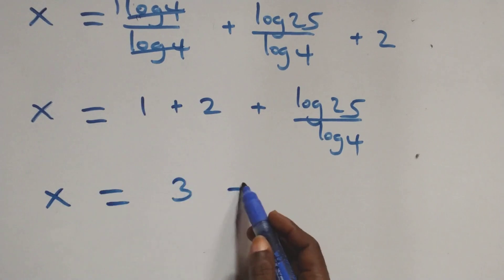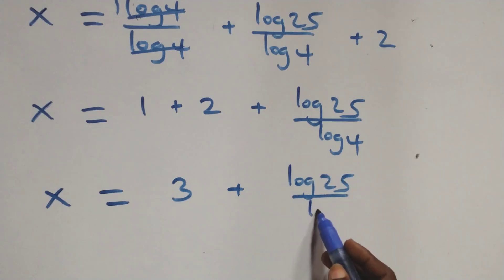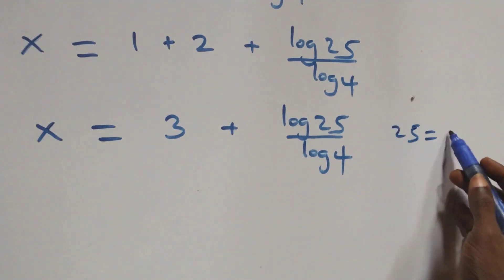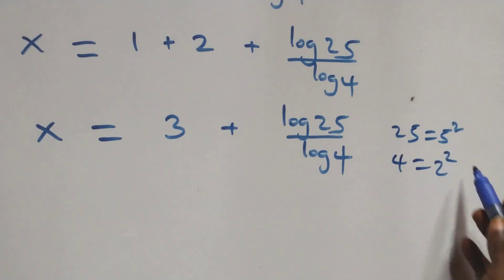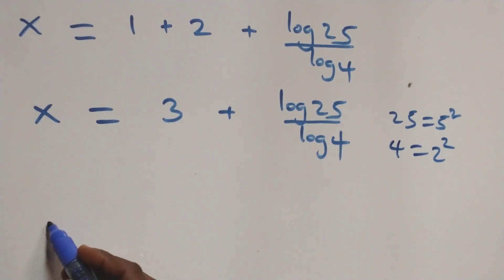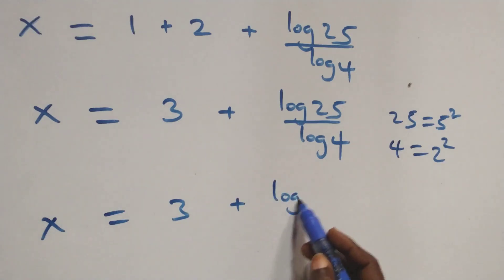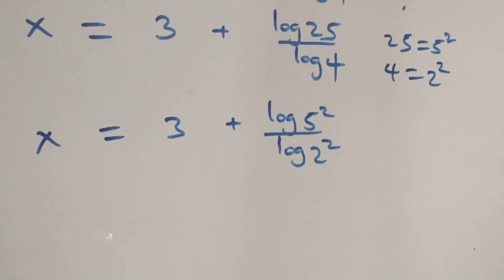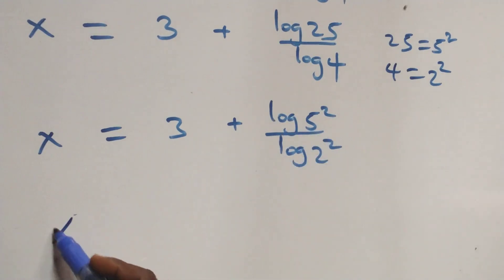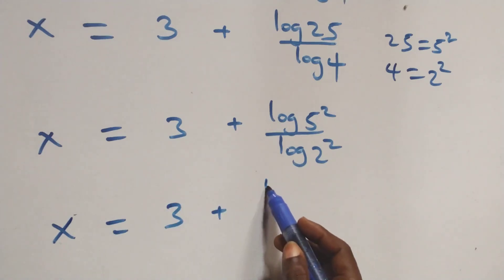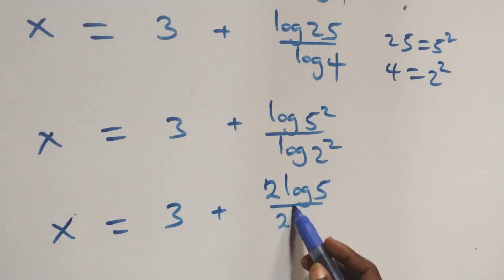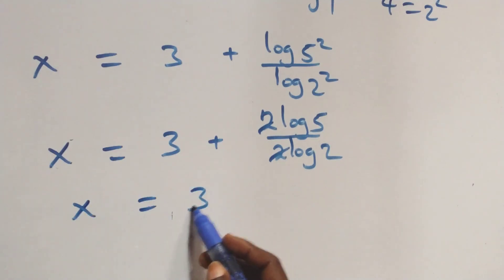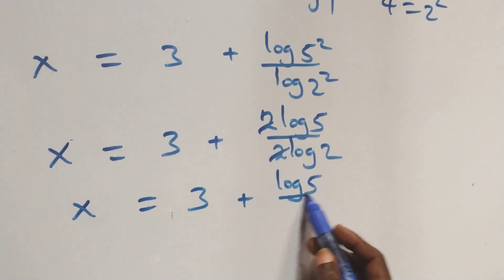That gives us 3 plus log 25 over log 4. We can write 25 as 5 times 5, that's 5 squared, and 4 as 2 times 2, that's 2 squared. What we have becomes x equals to 3 plus log 5 squared over log 2 squared. We apply the power log rule: 2 comes down on both, giving x equals to 3 plus 2 log 5 over 2 log 2. Here the 2s cancel each other, and we have x equals to 3 plus log 5 over log 2.